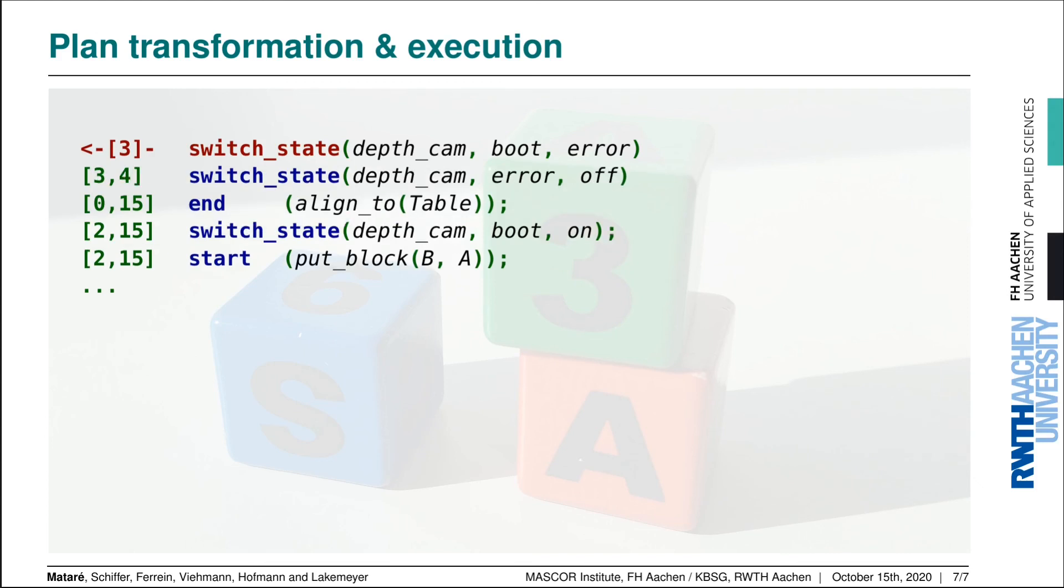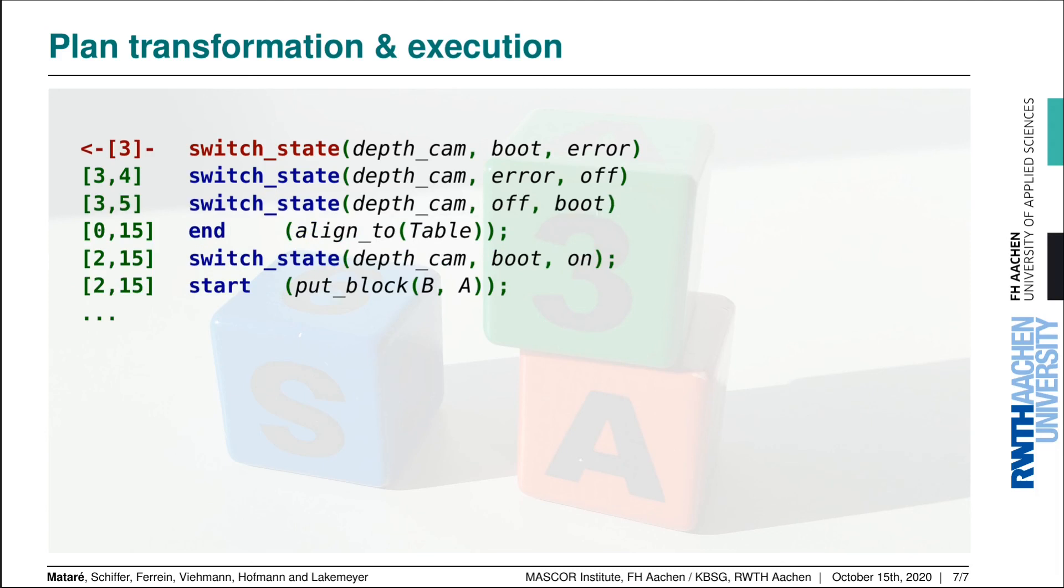The rest of the plan still requires the depth_cam to be switched on, so it will come up with a path through this timed automaton that will return the camera to the on state. The only path to do that is to go from the error state to the off state, and then another maintenance action that goes from the off to the boot state, effectively power cycling the camera. Once we have these maintenance actions in the schedule, we have actually recovered from an error state.